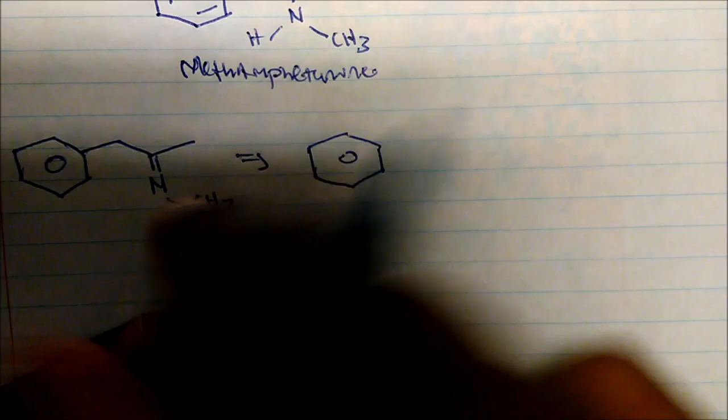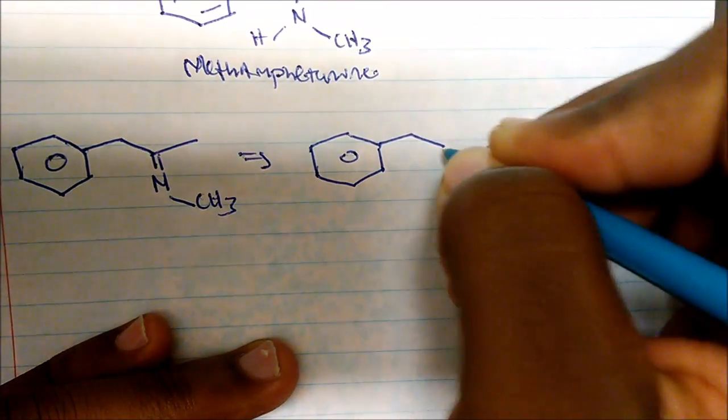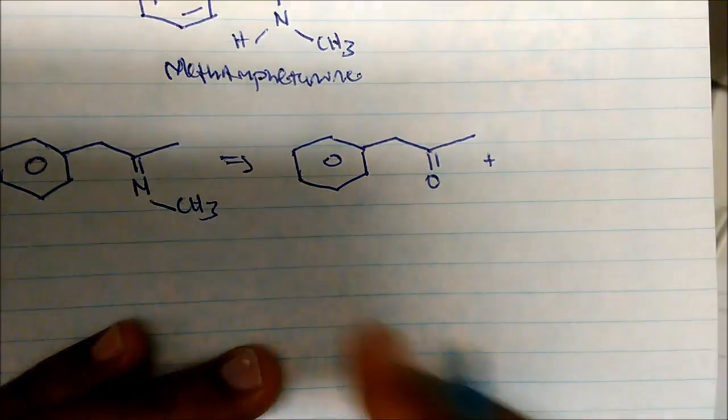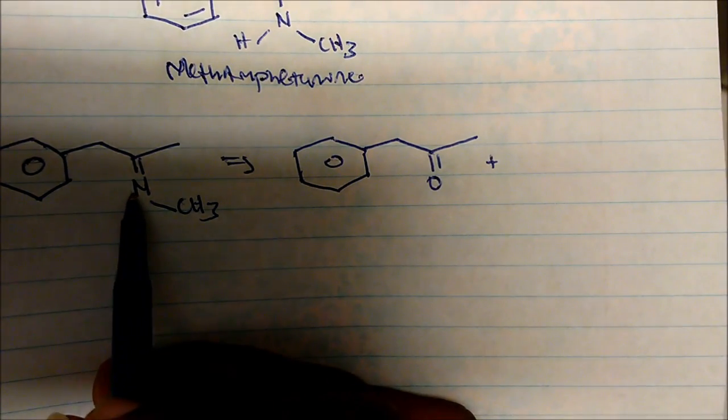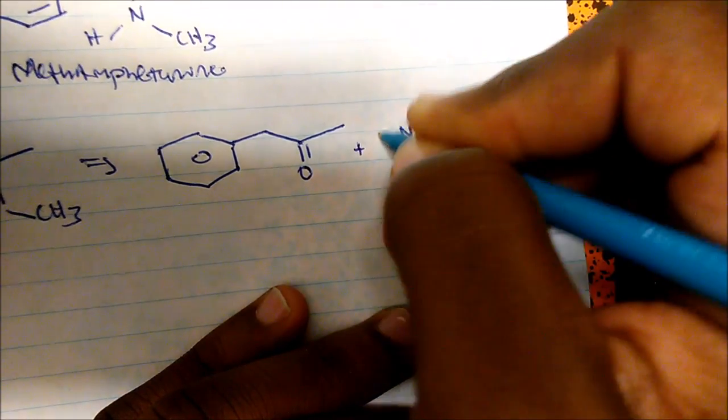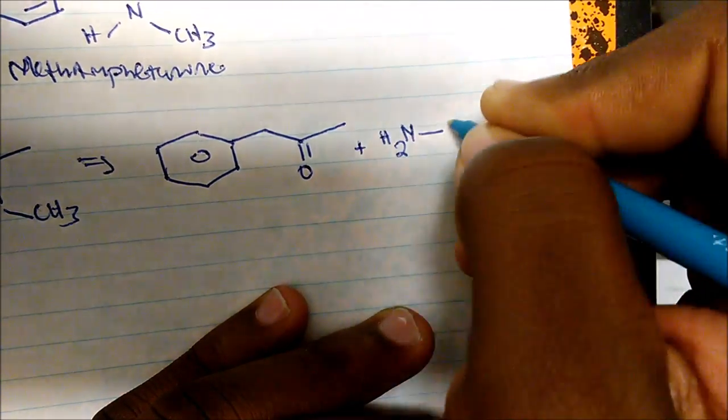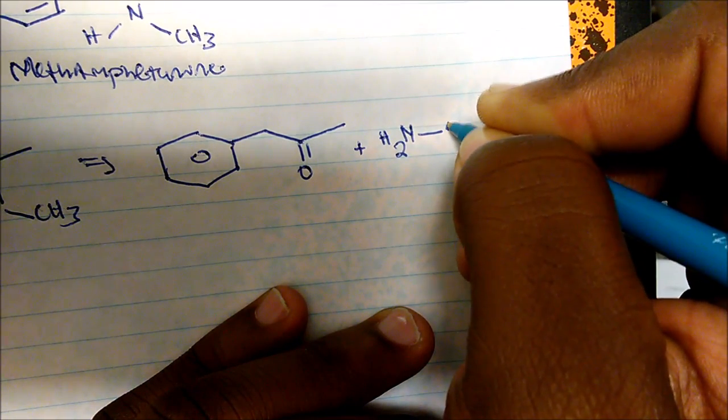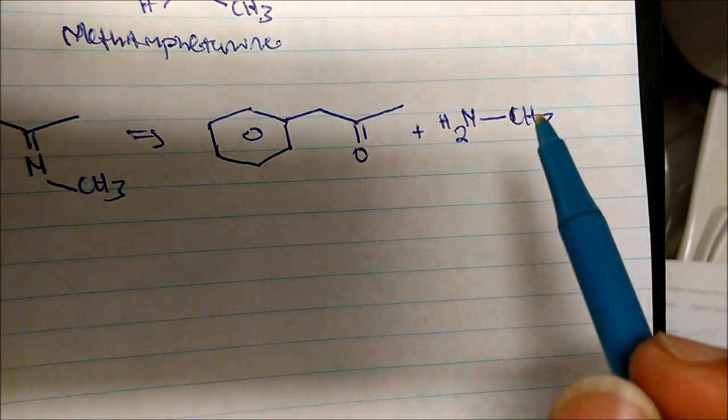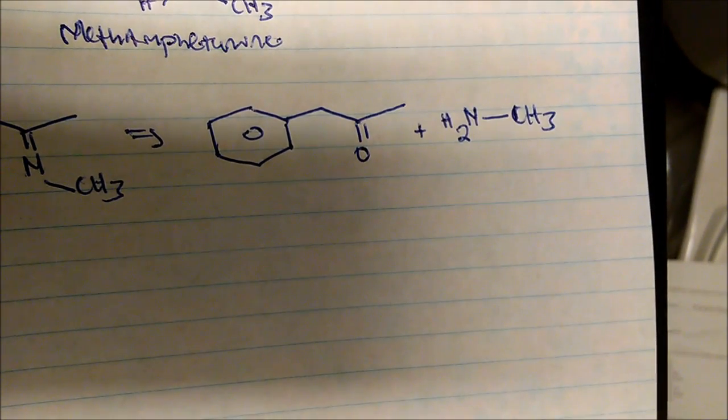If I retrosynthesize this some more, I know that that has to be a carbonyl that was replaced by the nitrogen. So we have this carbonyl compound here, plus I lost two hydrogens in order to get here. So therefore, this has to be methylamine.